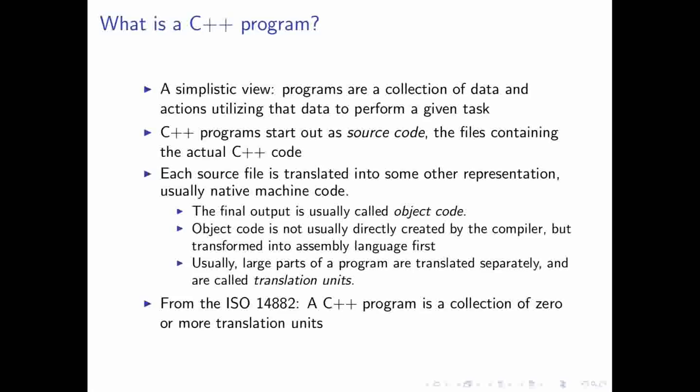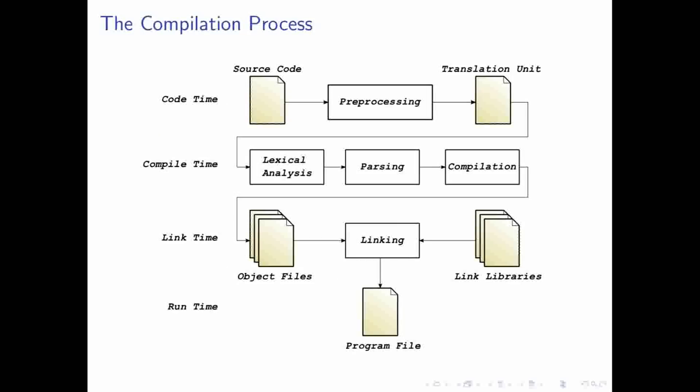The compiler usually gets as far as translating it into assembly language, and then it has something called an assembler that will convert that into something called object code. And you usually split up your C++ program if it's of moderate size into different parts, and these parts are called translation units. And so, from the actual C++ standard itself, a C++ program is then considered a collection of zero or more translation units.